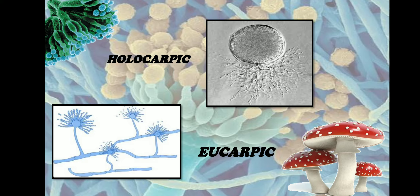During its vegetative phase the complete cell acts as a vegetative cell, and during its reproductive phase the complete cell acts as a reproductive cell. At one point in time the complete cell acts as either a vegetative or a reproductive cell — such fungi is called holocarpic fungi. An example is chytrids, specifically Synchytrium.